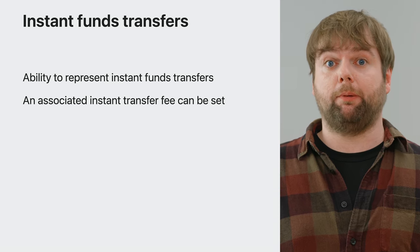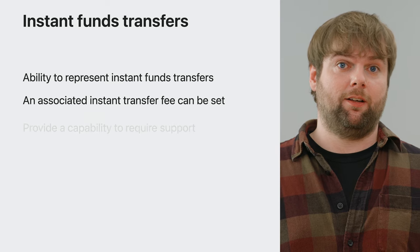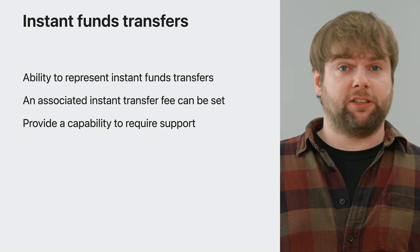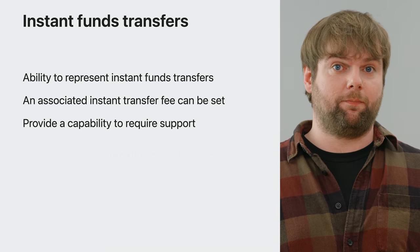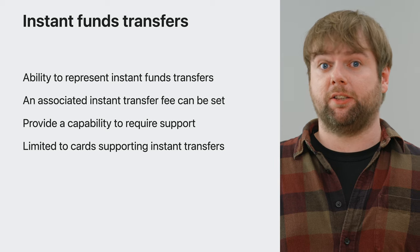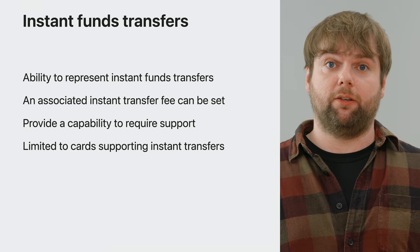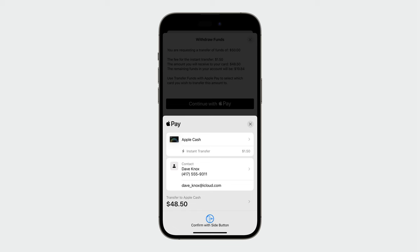Typically, a user will be given a choice of transfer speed within your app. When a user chooses to transfer funds instantly, provide the capability to require support for them. When doing so, the user's choice of cards will be limited to those that are known to support instant transfers. This is what an instant transfer would look like. The sheet looks very similar to before, but now we highlight the fact the transfer is instant, as well as any fee the user will be paying. The transfer amount has also been adjusted to take into account the fee.